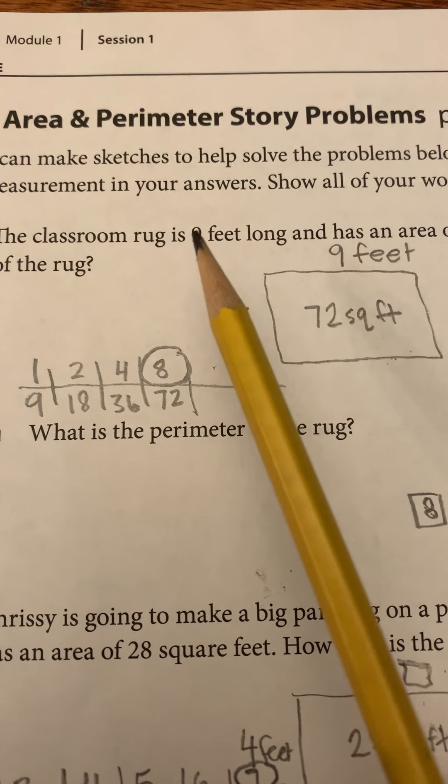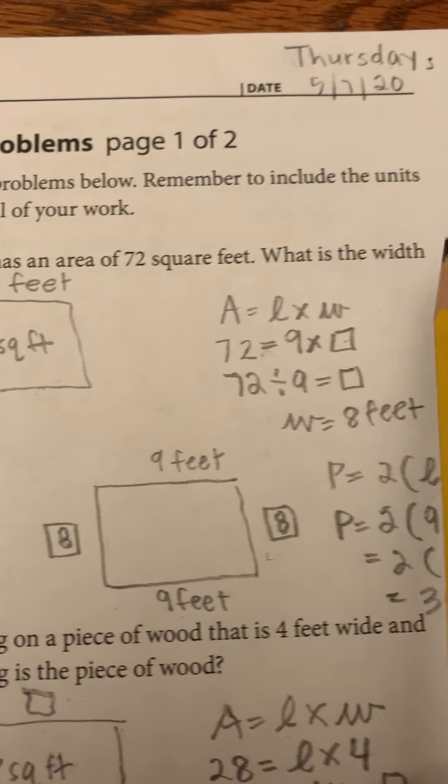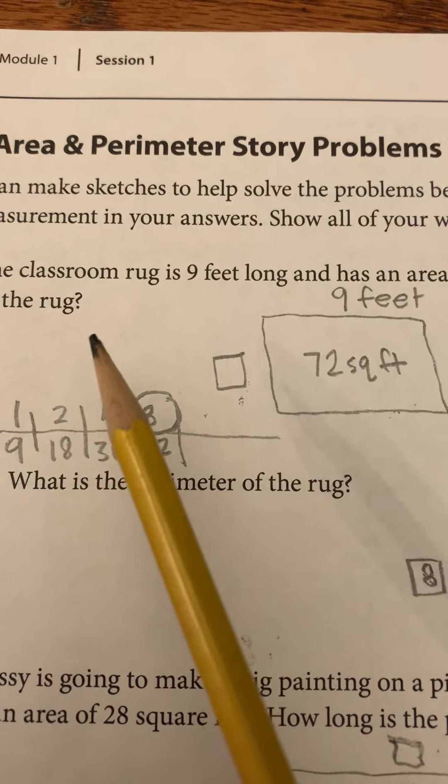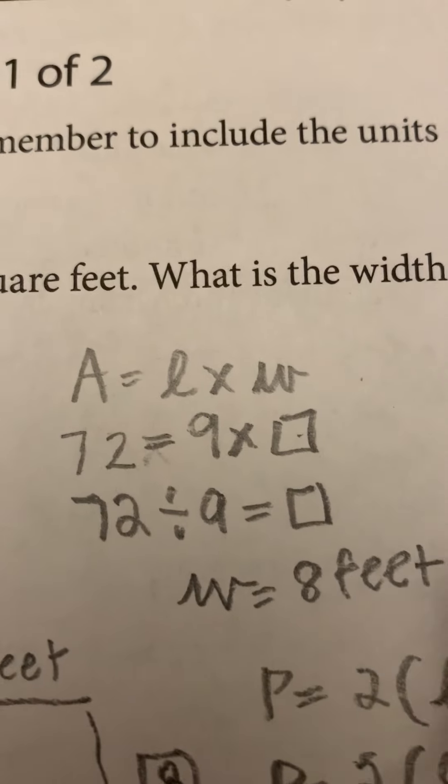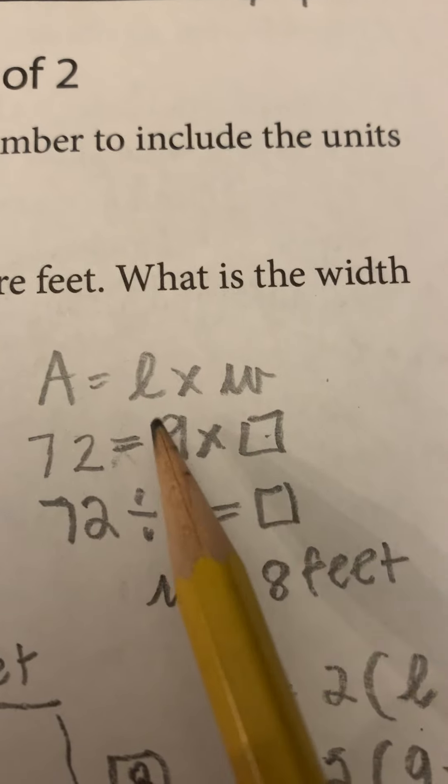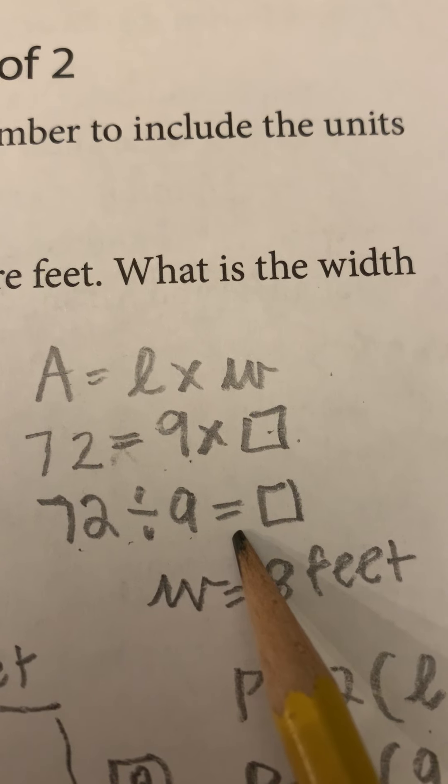This first one, the class rug, is nine feet long and has an area of 72 square feet. What is the width of the rug? So I drew a picture and then I went, area equals length times width. 72 equals nine times what? I could do 72 divided by nine.